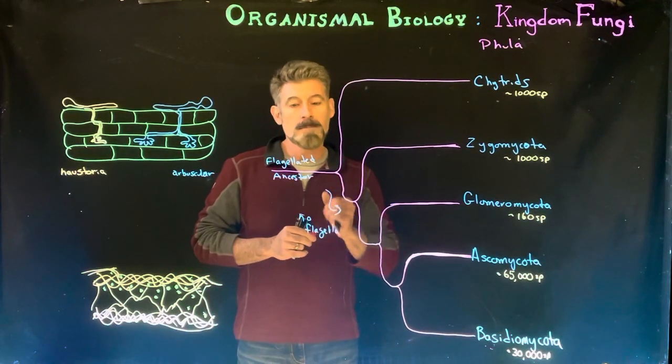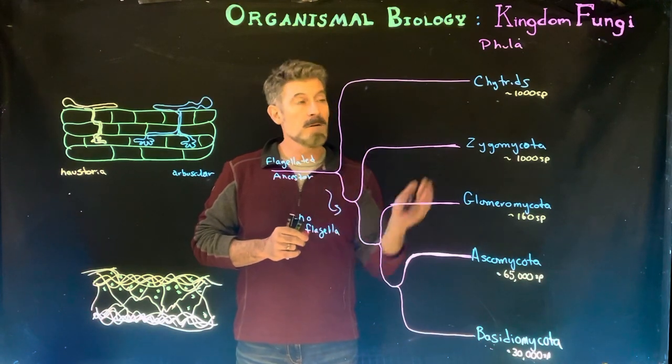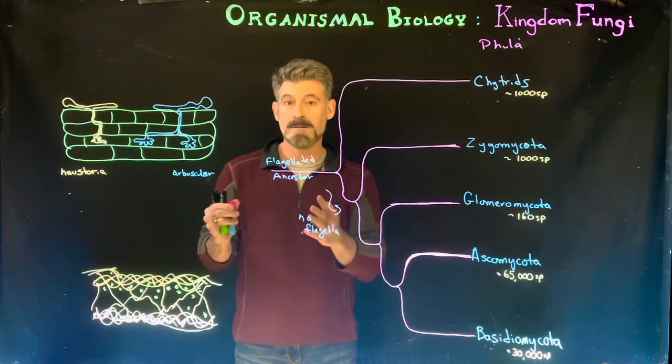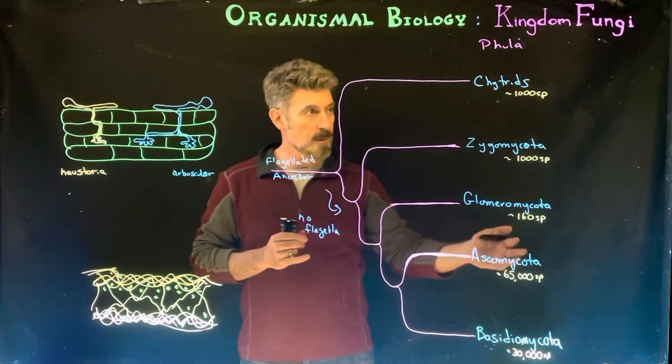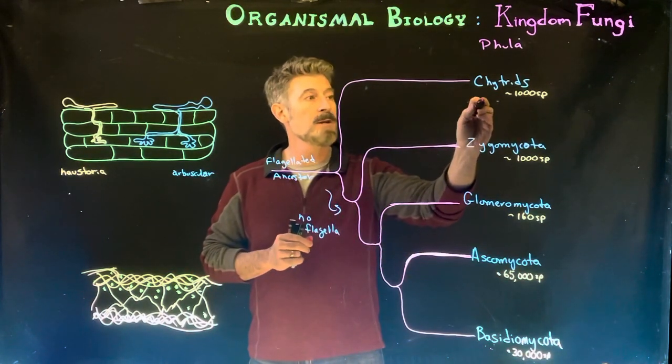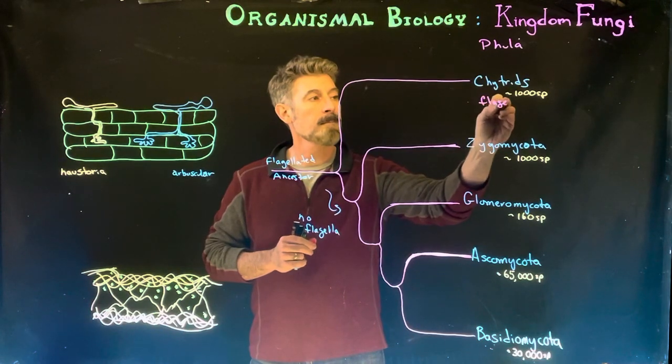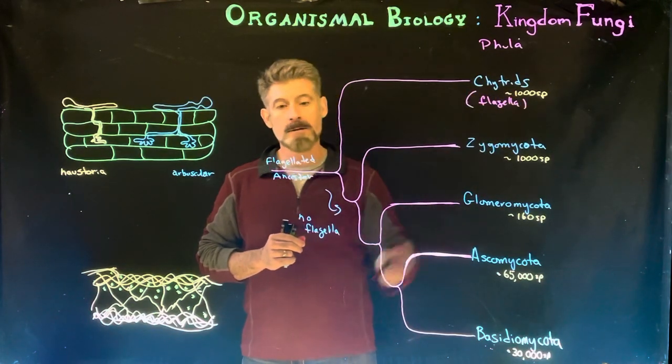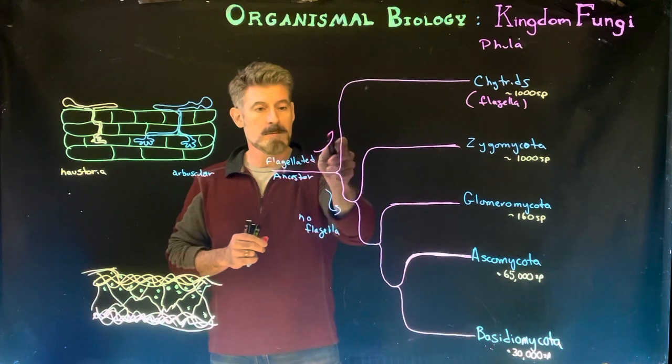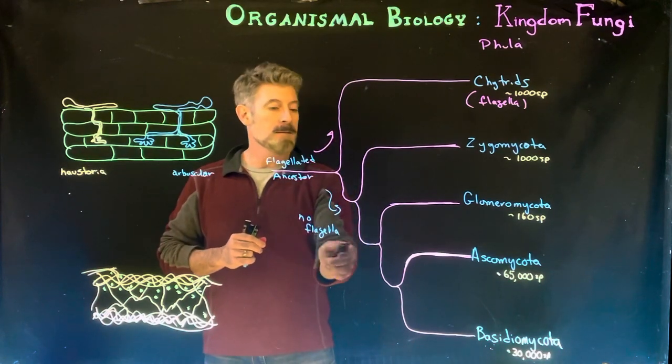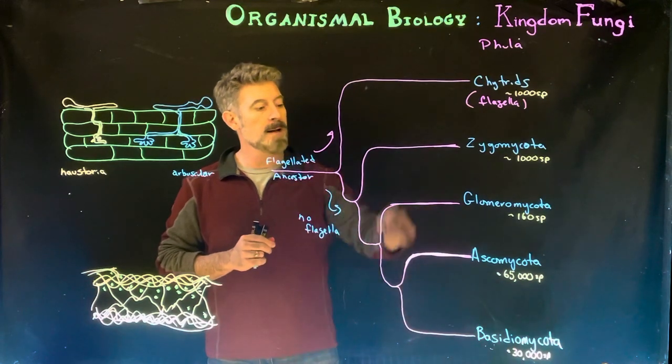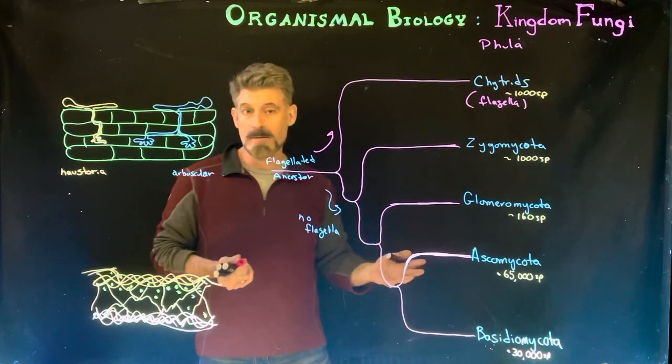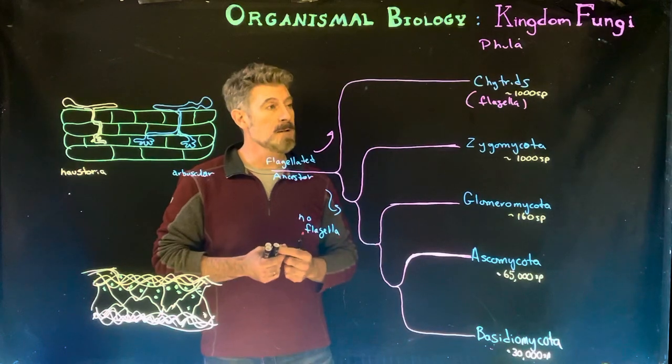Ancestors of all the fungi had flagella, and then they branch out into these groups. This group retains the flagella, the chytrids, so that's flagellated. But all the rest, the zygomycota, glomeromycota, ascomycota, basidomycota, the major groups here, don't have any flagella at any stage in their life.